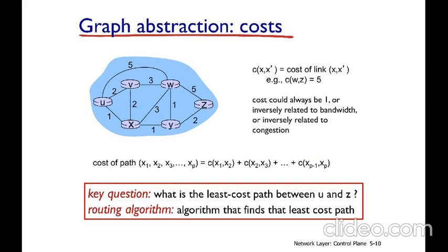How do we represent the cost? For example, for the link U-X, the cost C(U, X) is equal to 1. We represent the cost of a pair of nodes as C(X, X'). The cost of the path is the sum of all the link costs along the path. The main question is: which is the least cost path between, for example, node U and node Z?